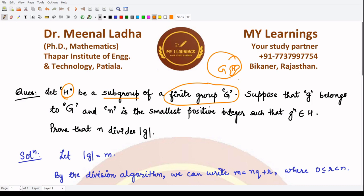In the subgroup, we are saying if g belongs to G, and if n is the smallest positive integer such that g raised to power n belongs to H, this is the condition that is given to us. We have to make use of this condition to prove that n divides the order of g.